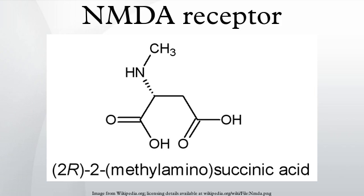Each subunit has an extensive cytoplasmic domain, which contains residues that can be directly modified by a series of protein kinases and protein phosphatases, as well as residues that interact with a large number of structural, adaptor, and scaffolding proteins. The glycine binding modules of the NR1 and NR3 subunits and the glutamate binding module of the NR2A subunit have been expressed as soluble proteins, and their three-dimensional structure has been solved at atomic resolution by X-ray crystallography. This has revealed a common fold with amino acid binding bacterial proteins and with the glutamate binding module of AMPA receptors and kainate receptors.